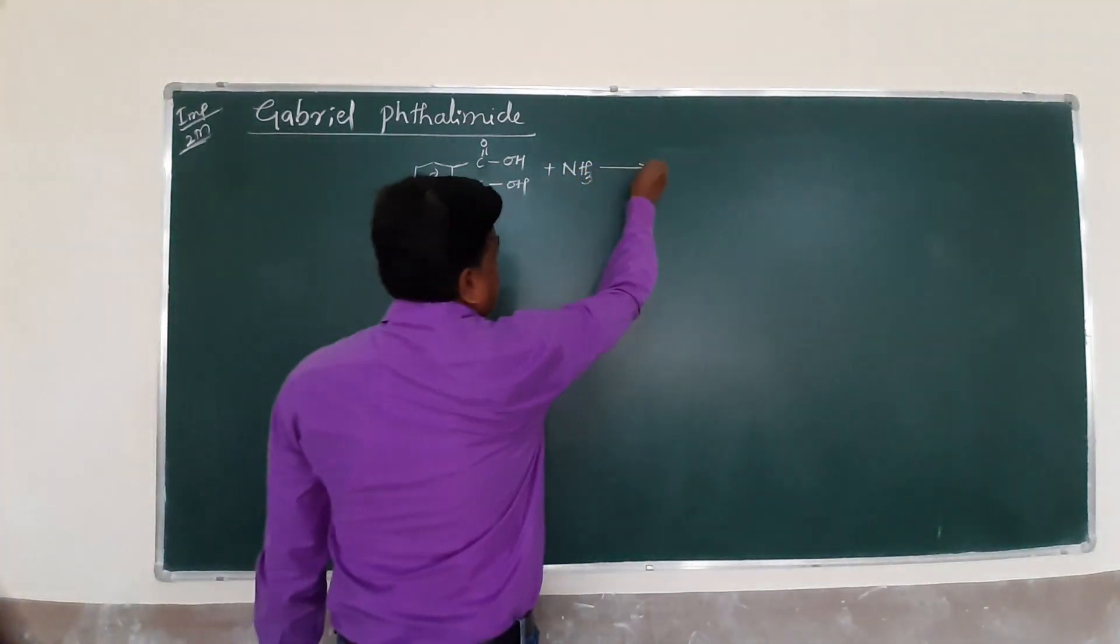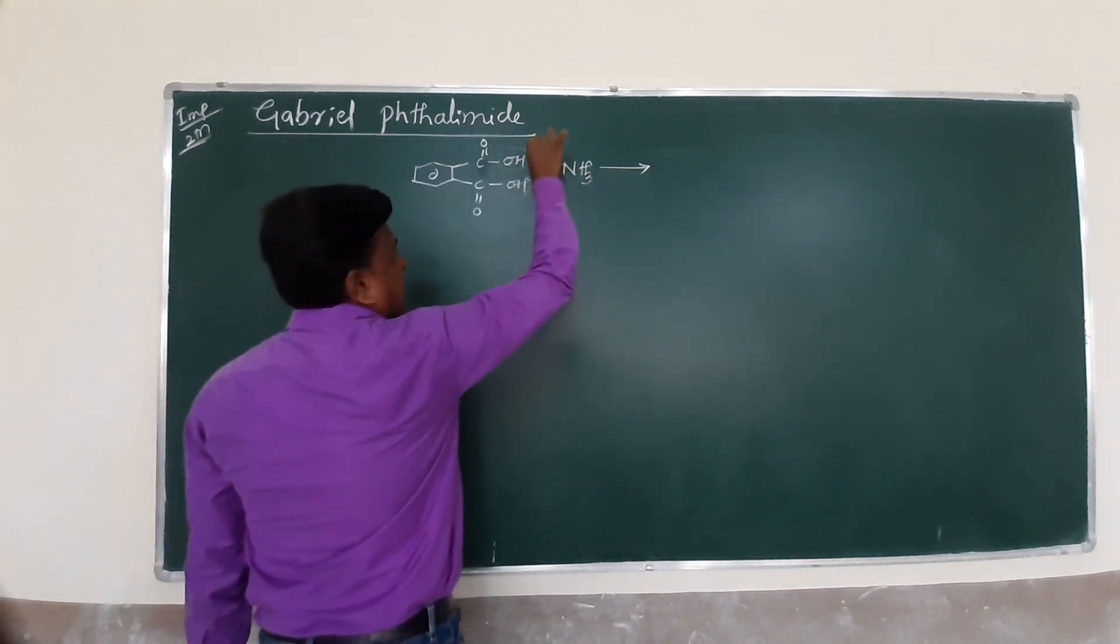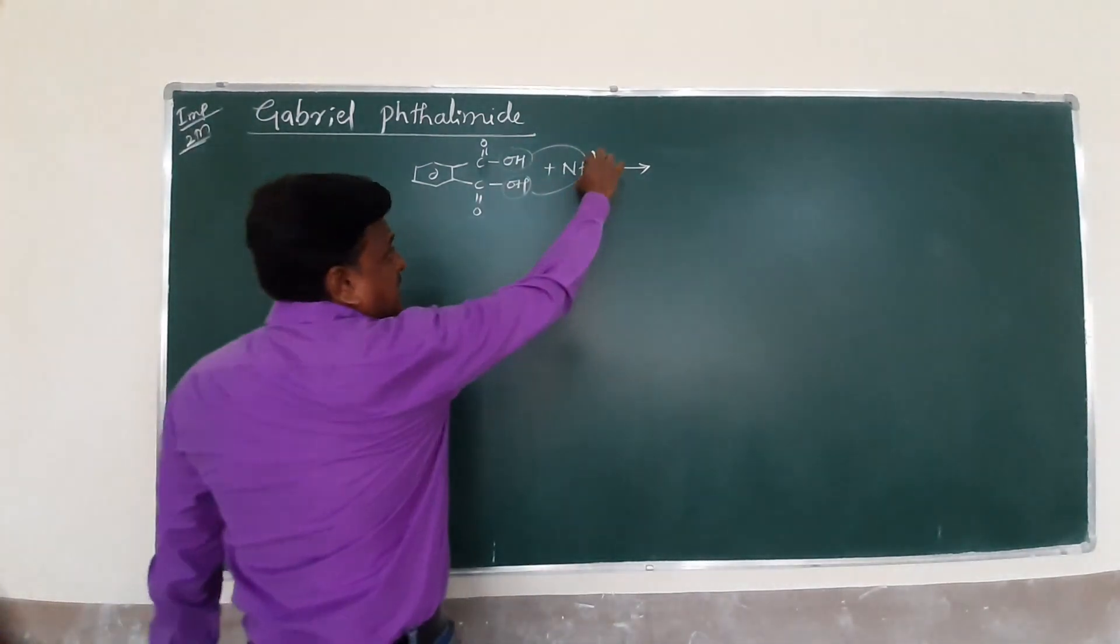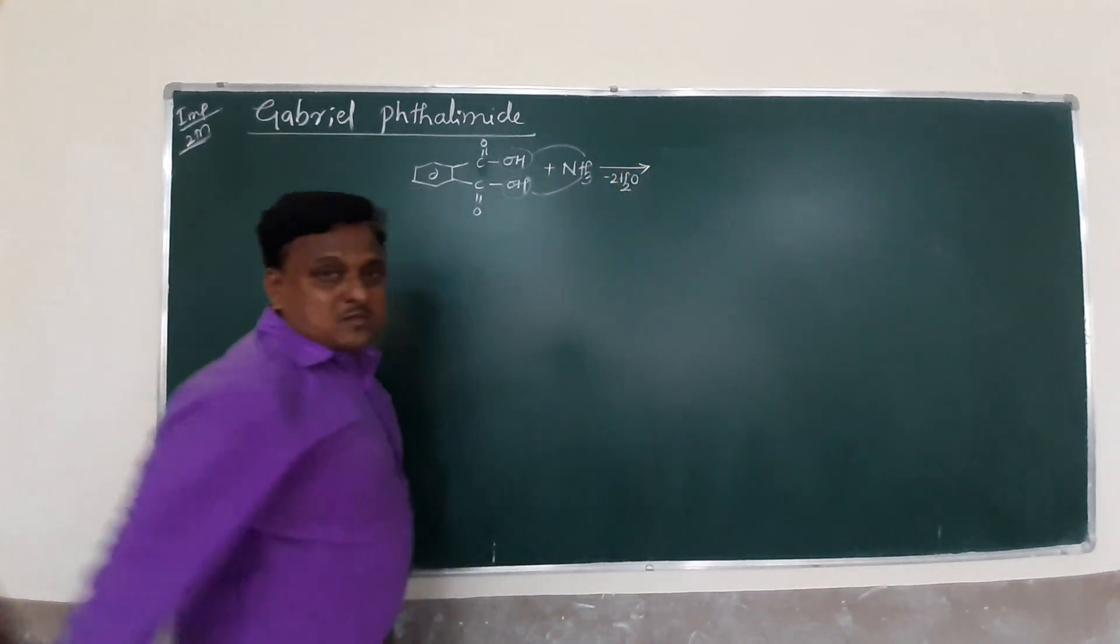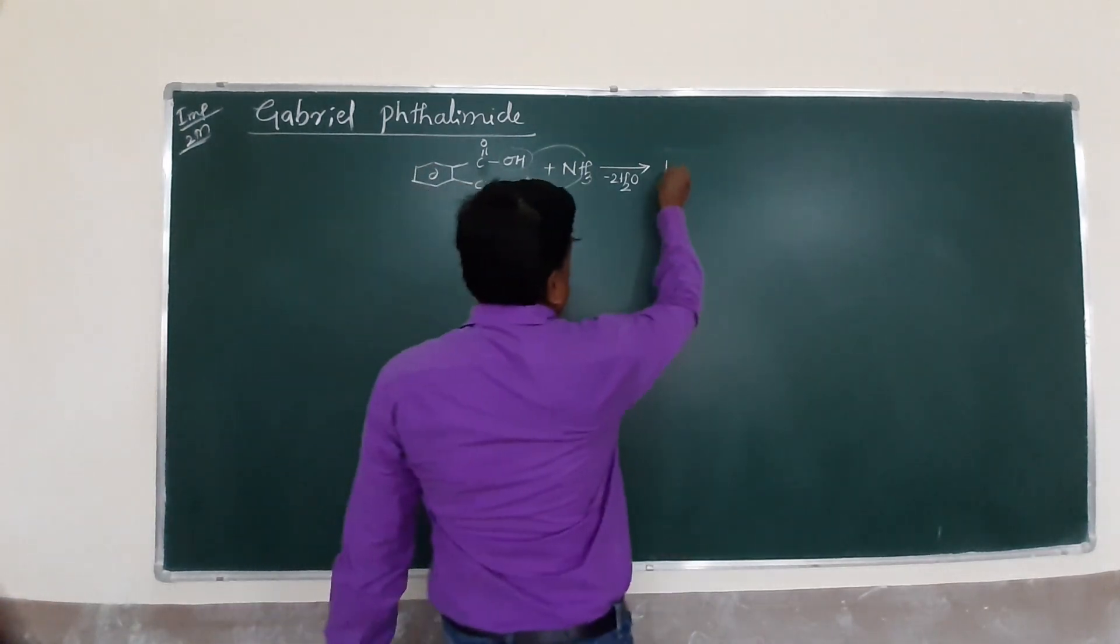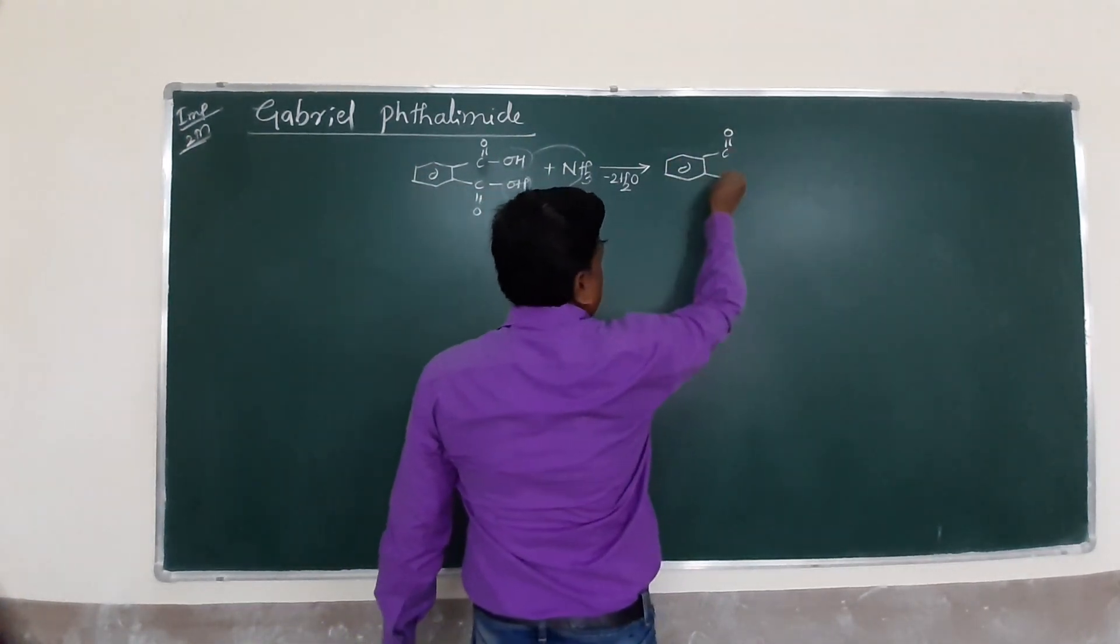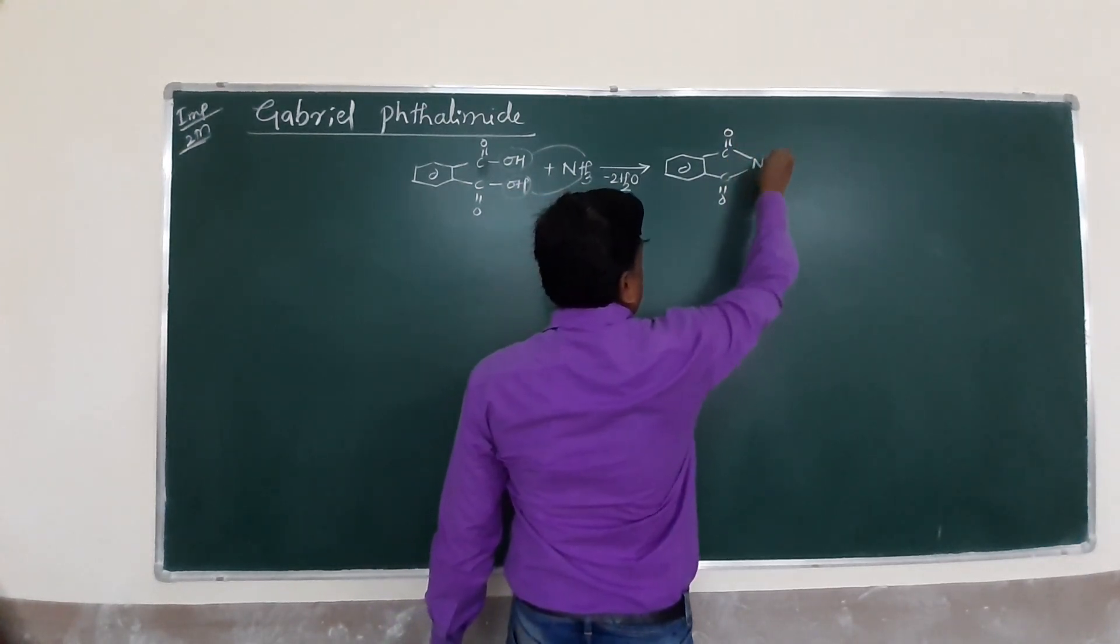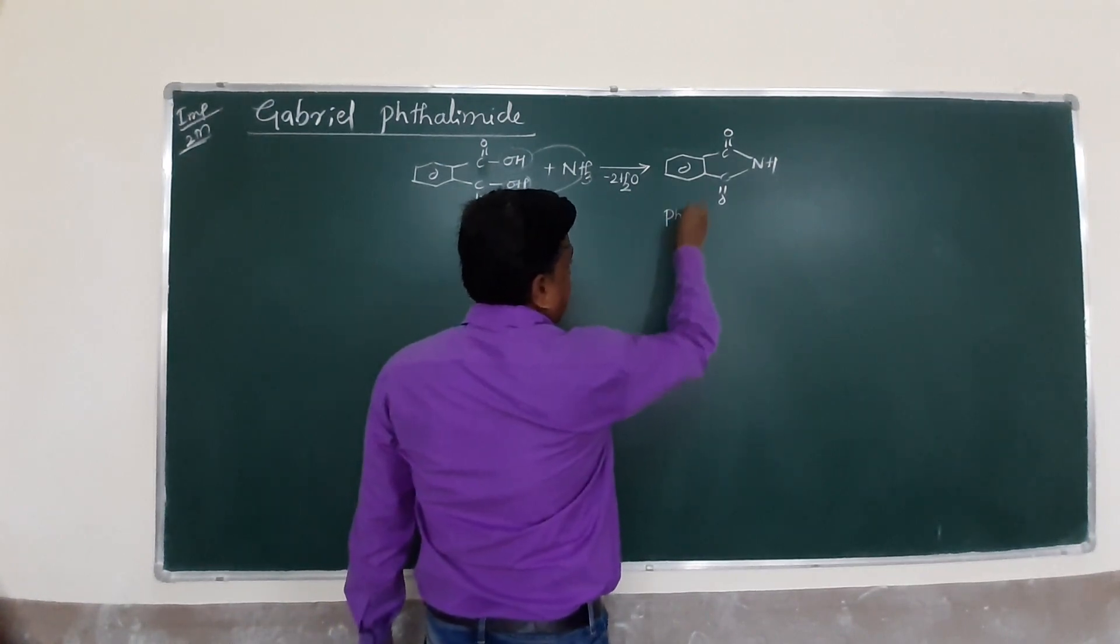It undergoes ammonolysis. This is ammonolysis with NH3. Here it releases these OH and this OH combined with two hydrogen molecules, here 2H2O water. Here only NH remains. Now this is your compound, C double bond O, C double bond O. Only it remains NH. The name of this compound is phthalimide.